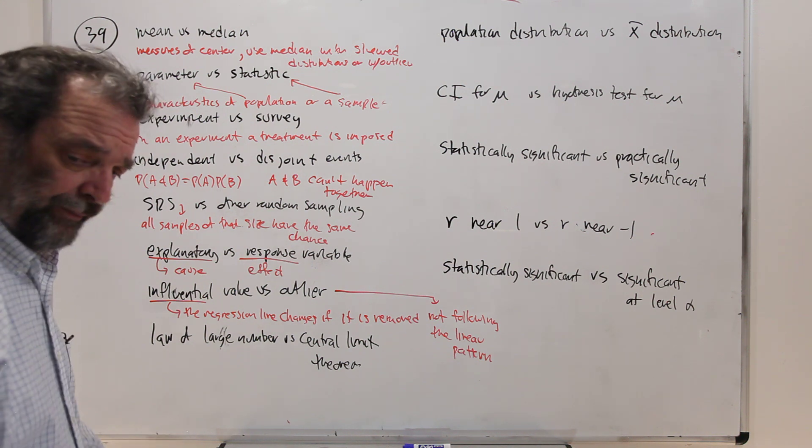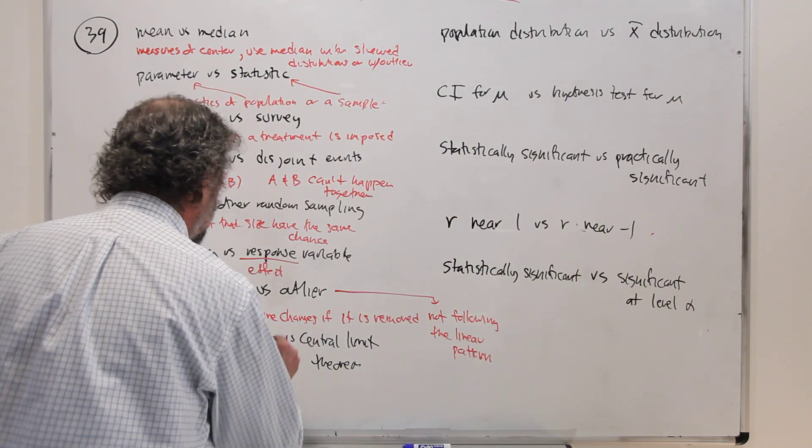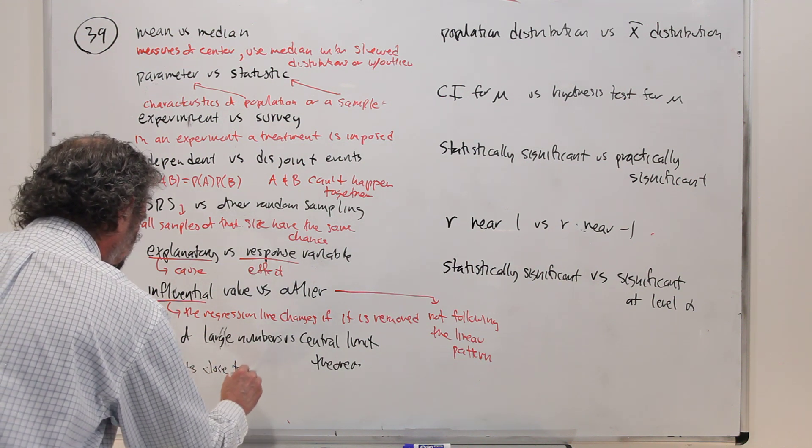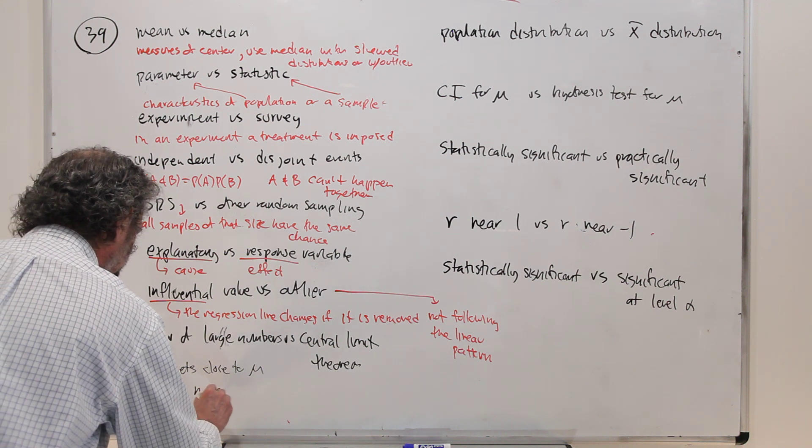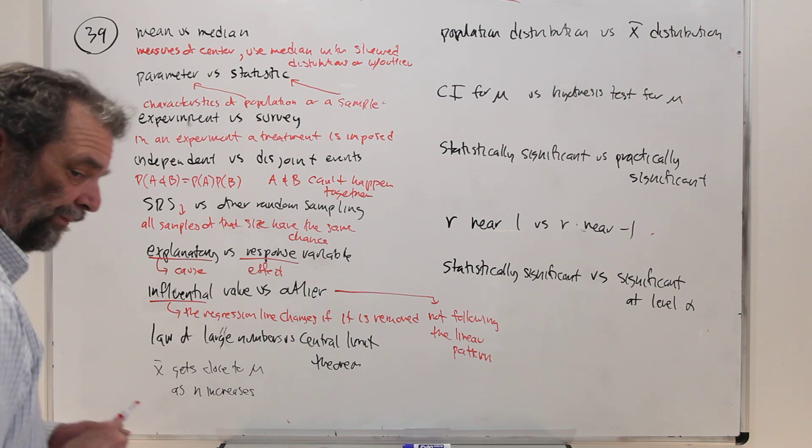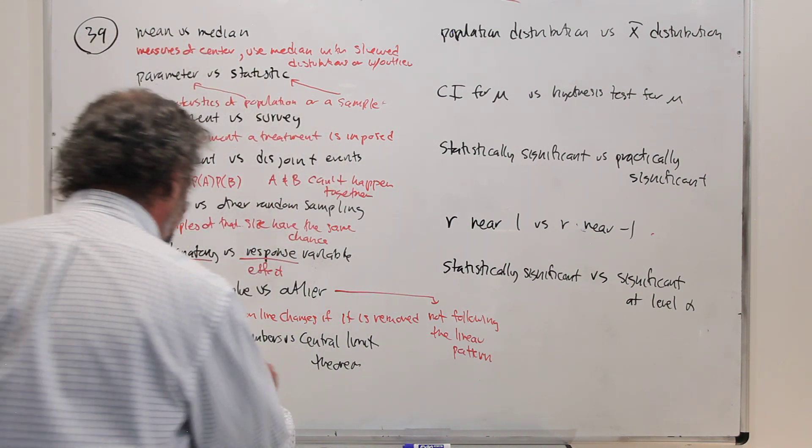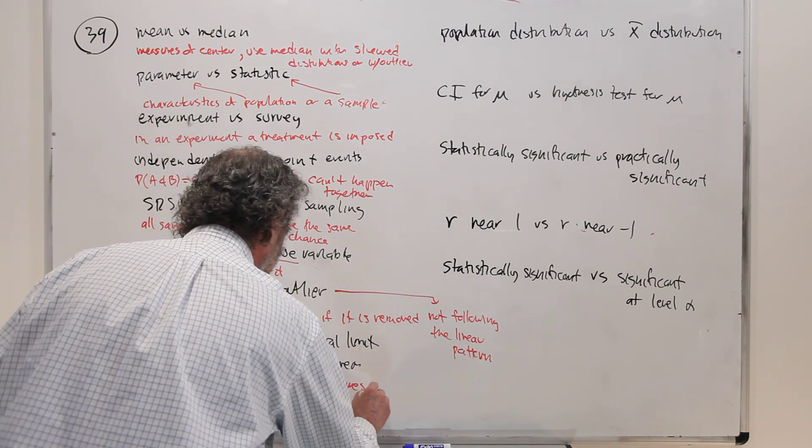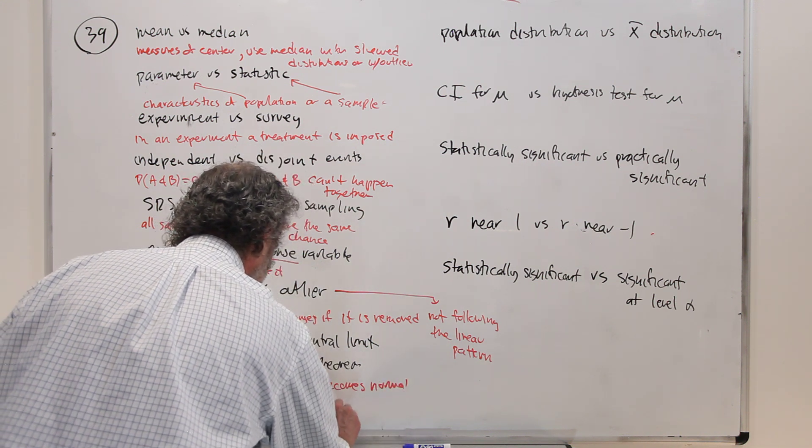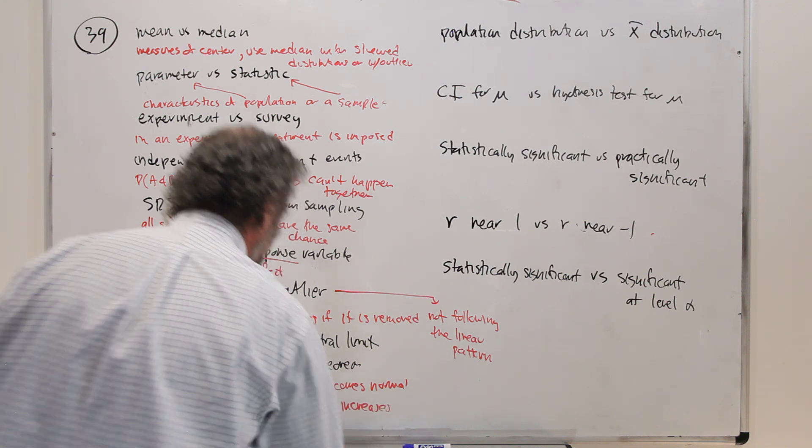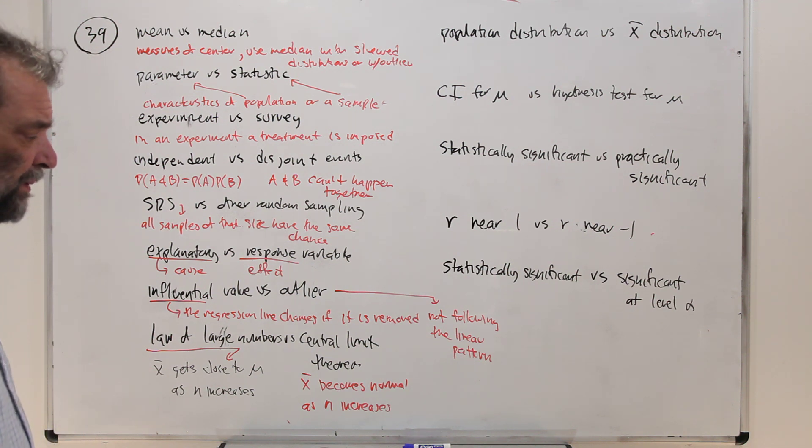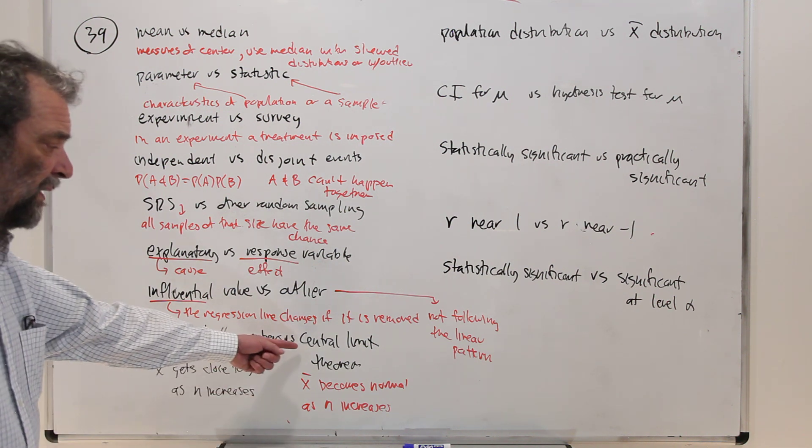Law of large numbers. The law of large numbers says x bar gets close to mu as n increases. And this one over here says, that's law of large numbers, x bar becomes normal as n increases. So we use the central limit theorem when we compute a t statistic or a z statistic when we don't think the population is normally distributed. Because it has x bar in it and x bar becomes normal when n is large. Even if the population isn't normal, that fact is the central limit theorem.